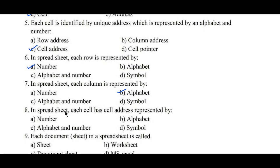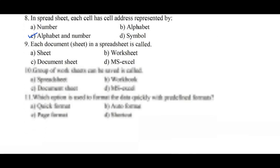Question number 8: In a spreadsheet, each cell has a cell address represented by — Option A: number, B: alphabet, C: alphabet and number, D: symbol. Cell address is represented by alphabet and number, hence Option C is the right answer.